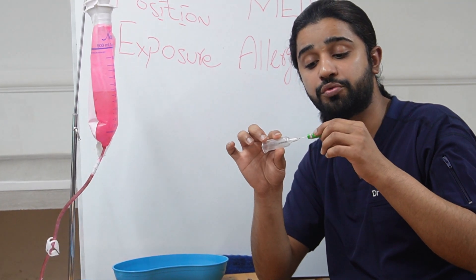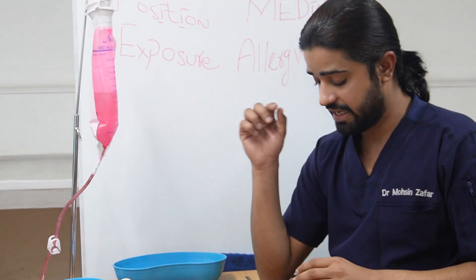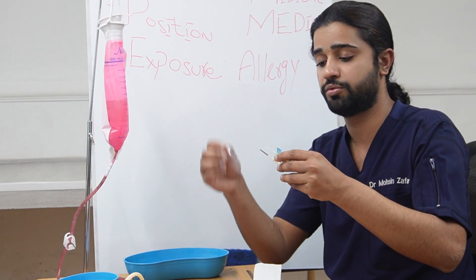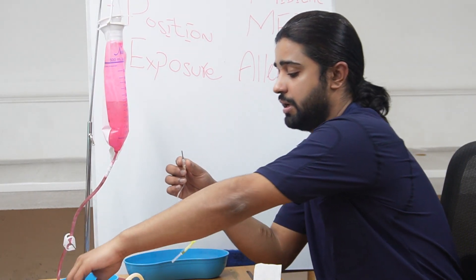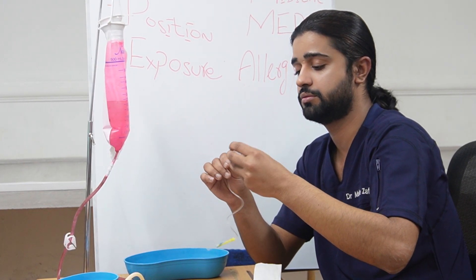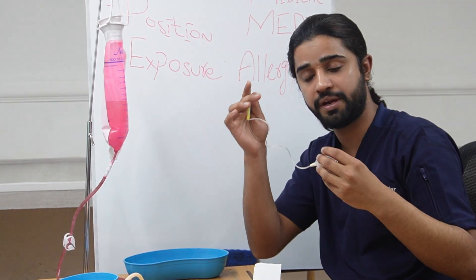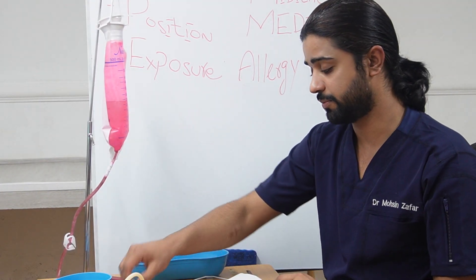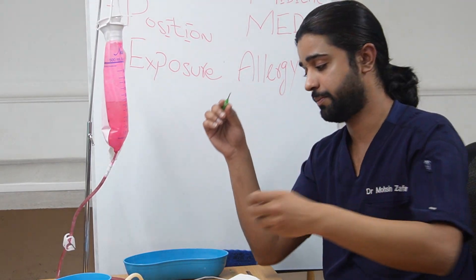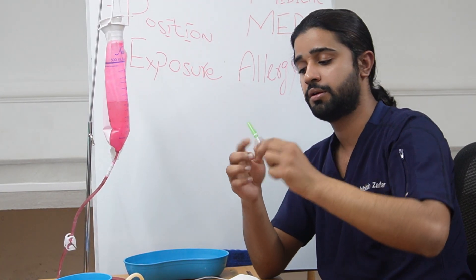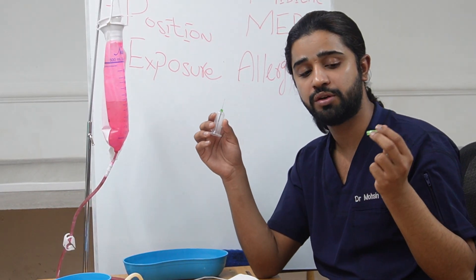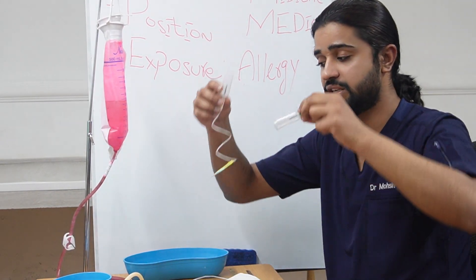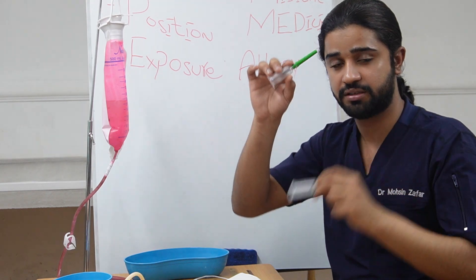The second type is a butterfly needle — take it out, attach it to the Vacutainer like this, remove the cap, and use it. The third technique: take the white cap out, attach it to the Vacutainer, take the cap out, and then you can use it. So there are three types of needles: two you need to attach yourself and one comes already attached.